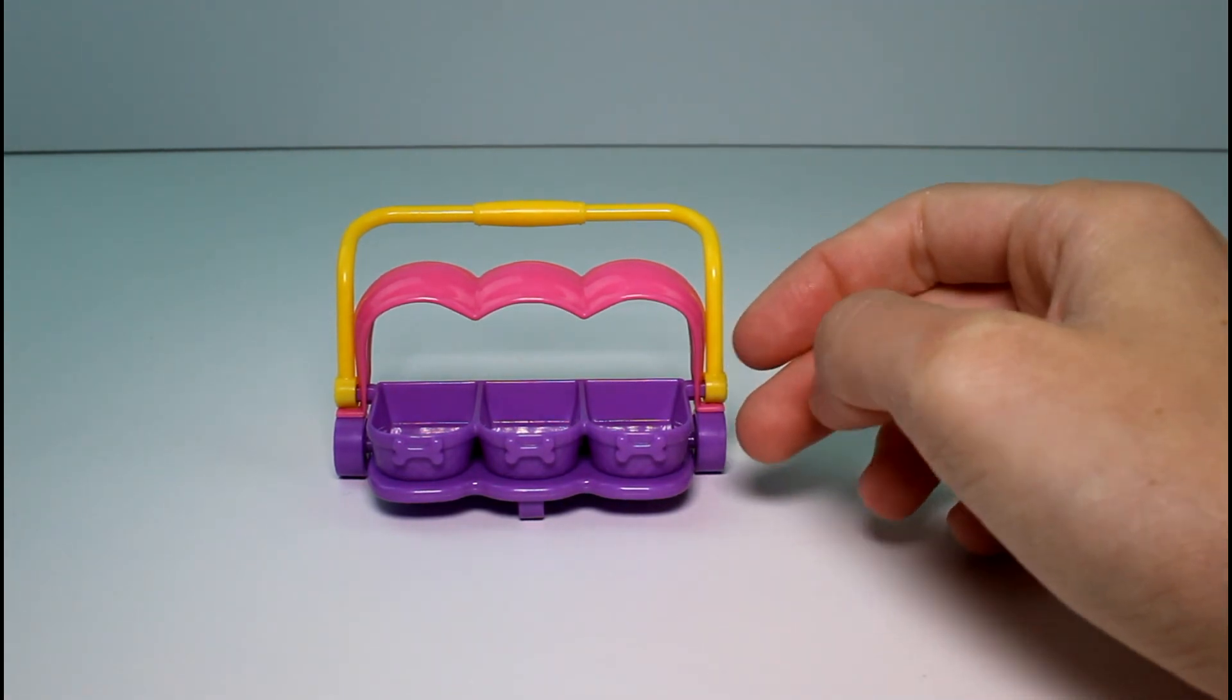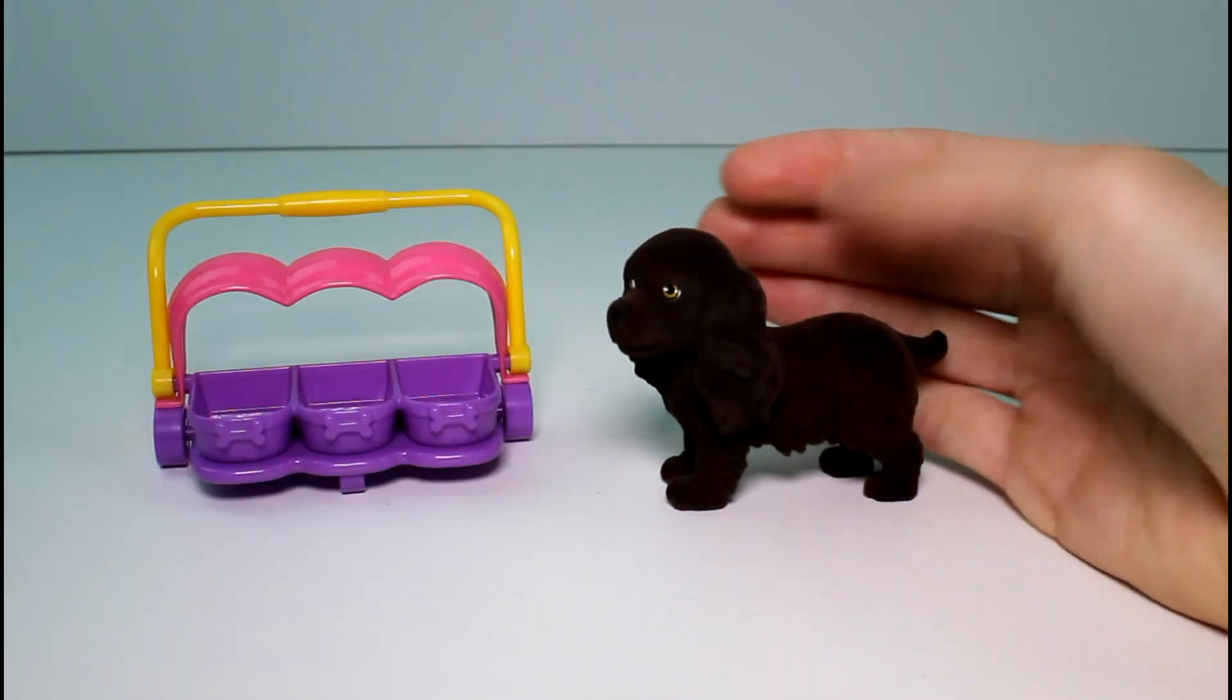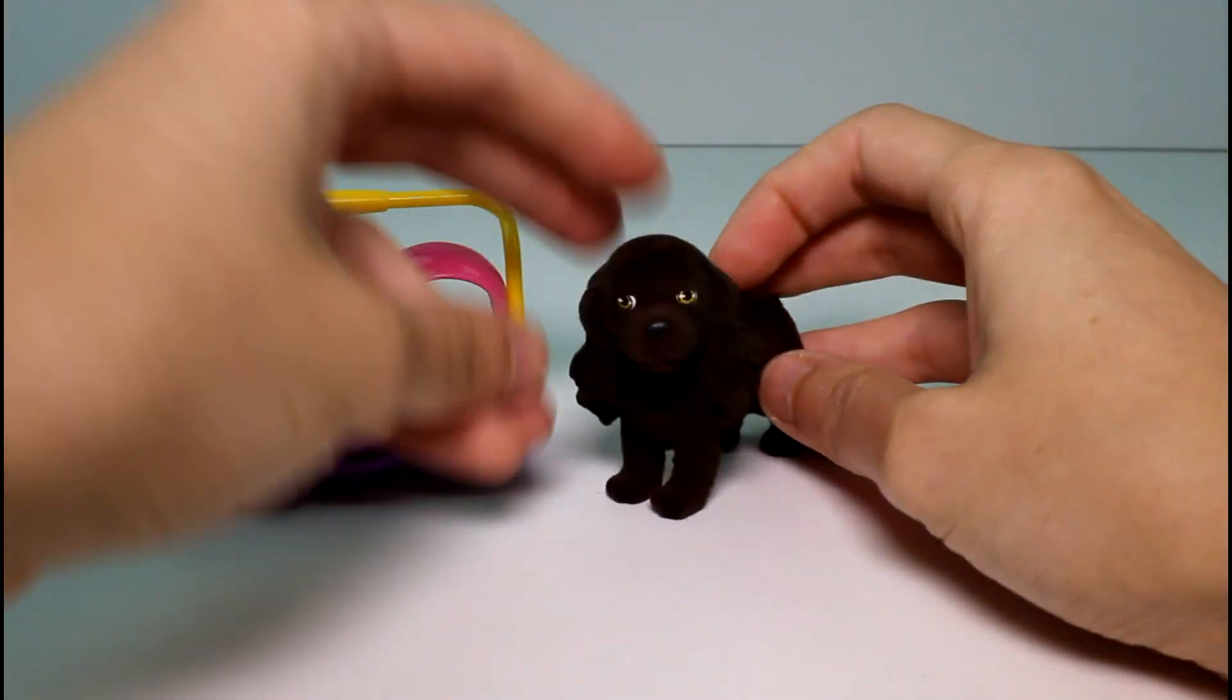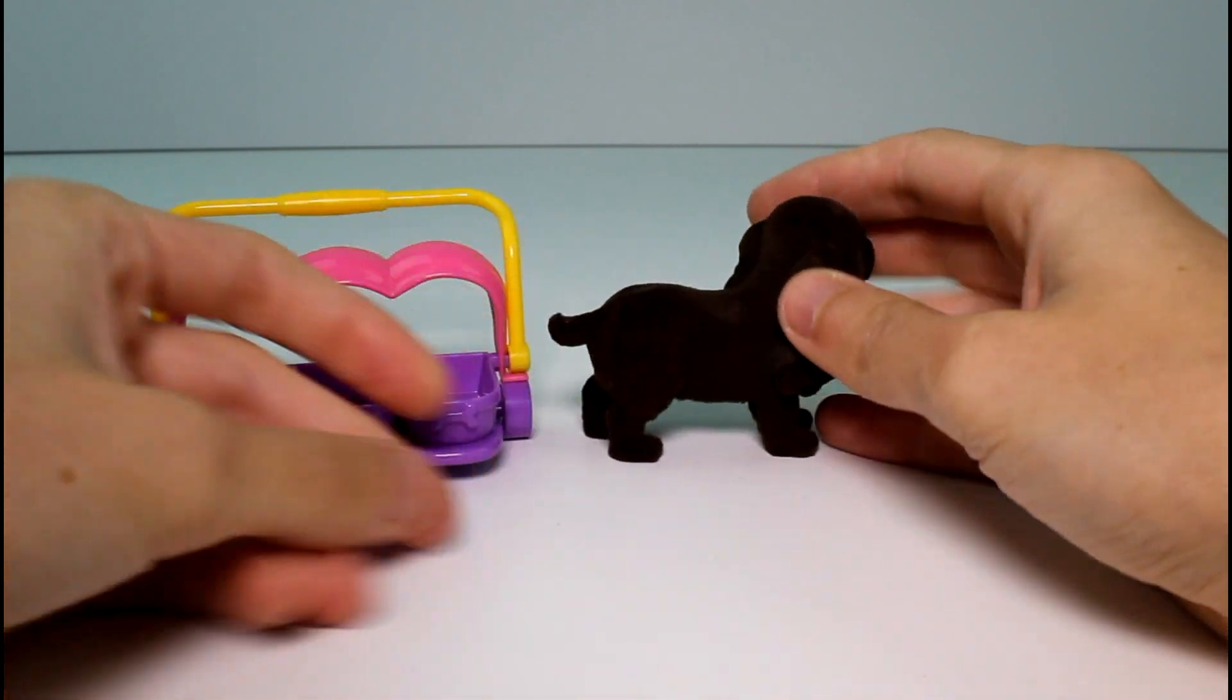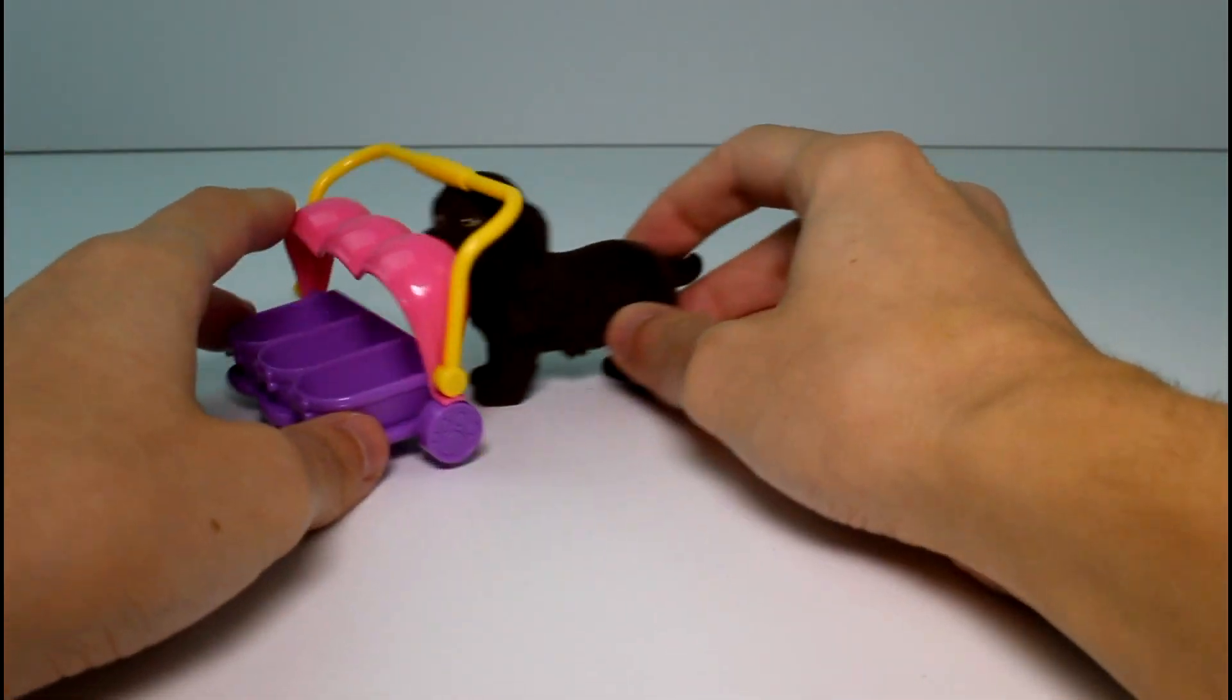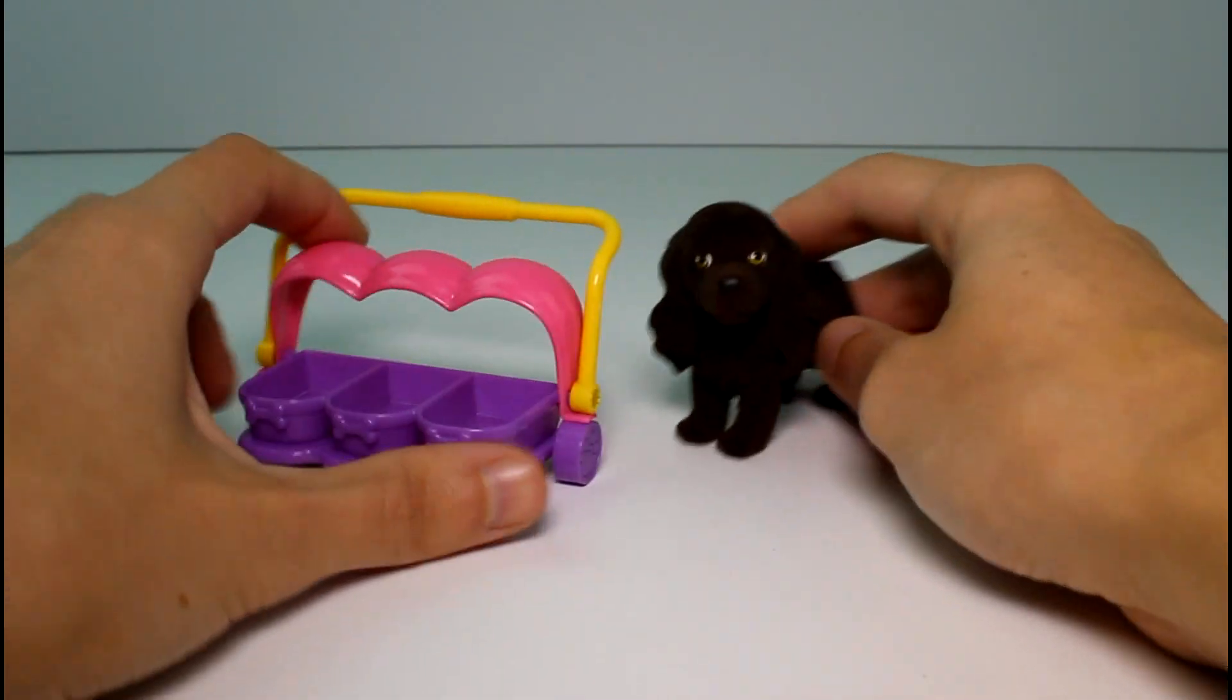And then we have the mama. She is appearing so much darker than she is on camera. She's like a really dark chocolate brown. She's gorgeous. She has these cute yellow eyes. And she's very long haired and so adorable. And she can kind of reach the stroller. I wish she was a little bit taller so she could push the stroller around. But that's okay.